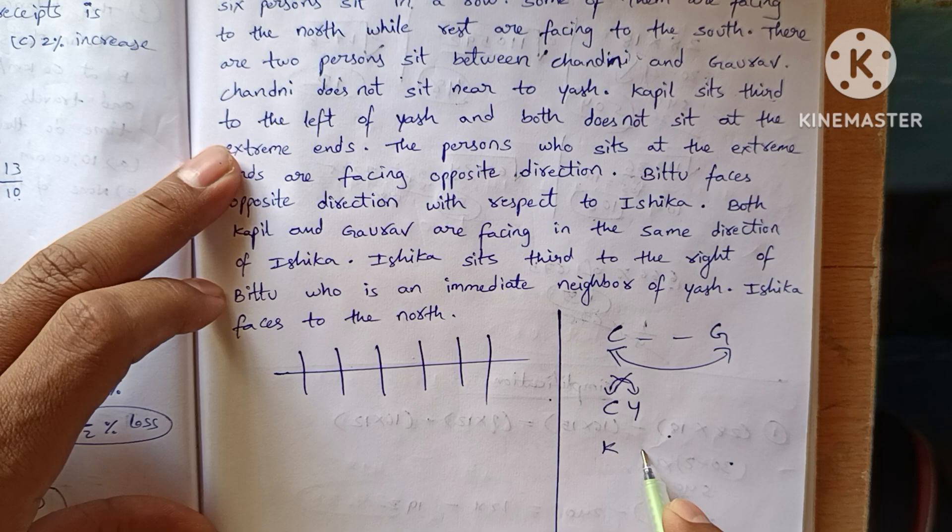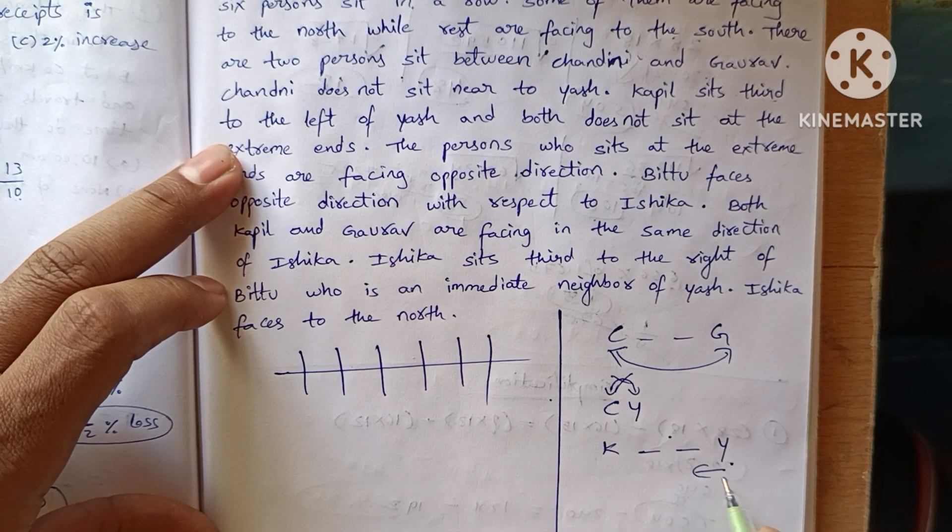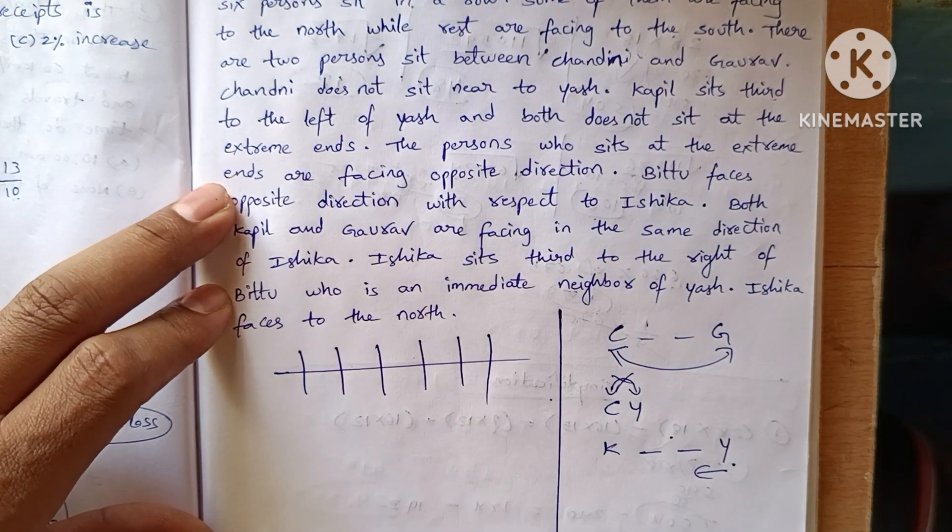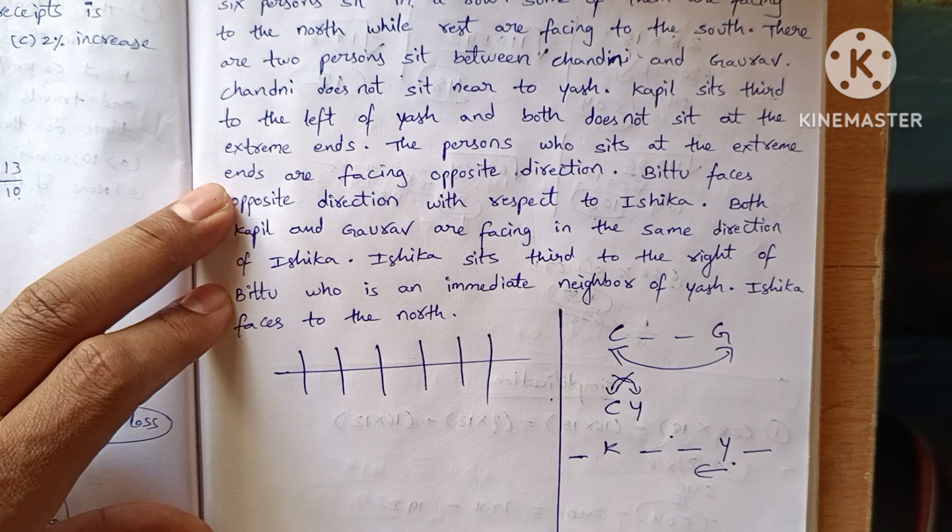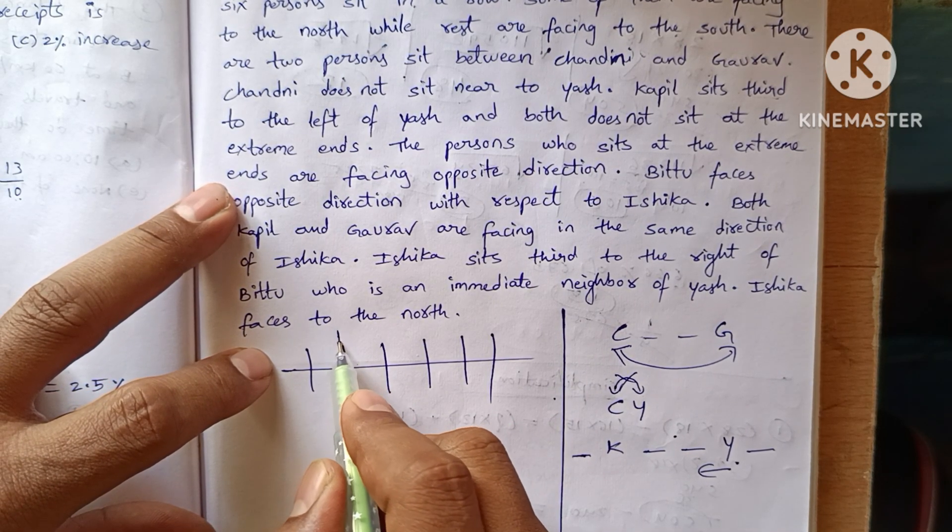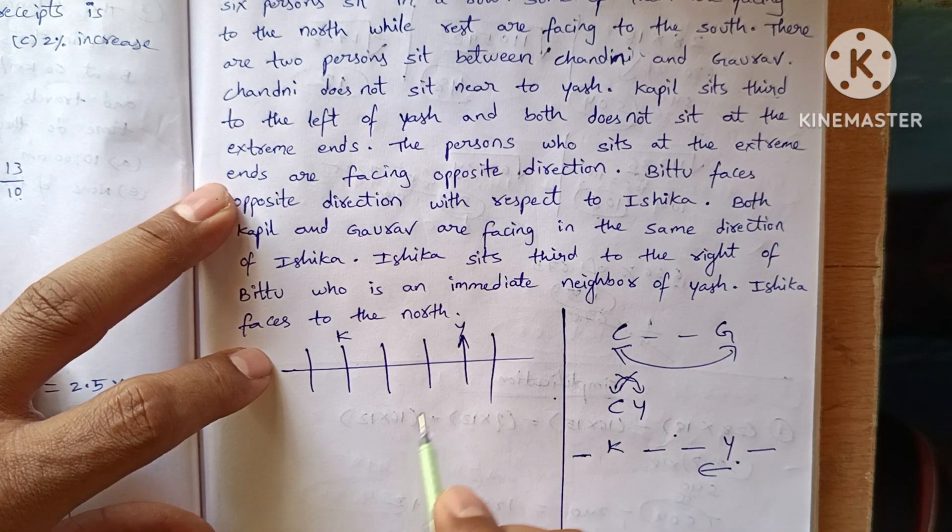Kapil sits third to the left of Esh, and both do not sit at the extremes. So what are the possible arrangements? We can write like this, this is on this side, or else we can make like this.